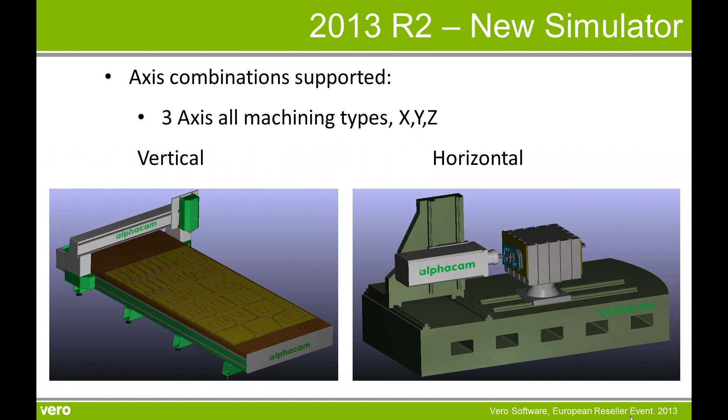Axis combinations supported include 3 axis for all machining types: X, Y and Z, both vertical and horizontal.